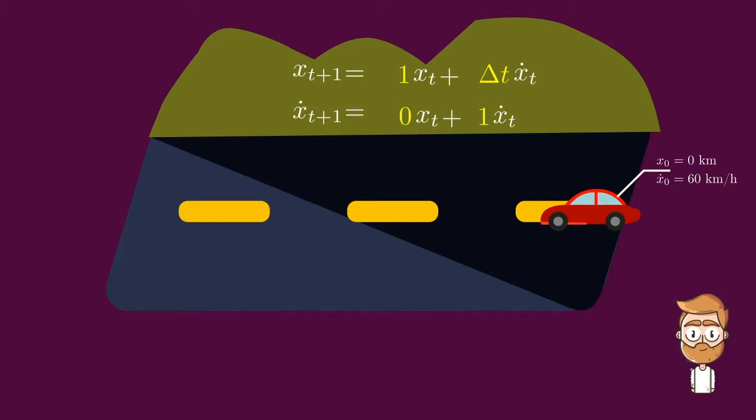Usually we like to write these types of equations in matrix and vector format for convenience, so the car's position and speed will evolve according to this simple linear dynamical system.